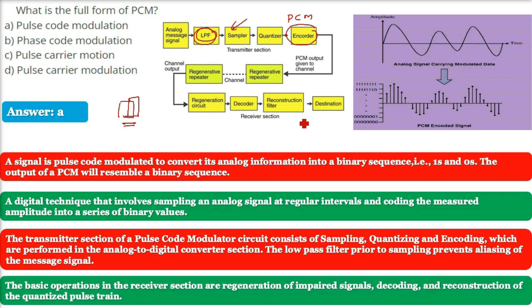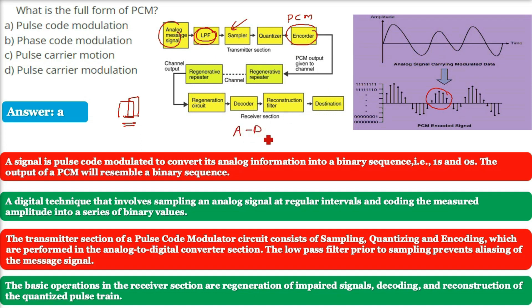At the receiver section, the operations are: regeneration of impaired signals, decoding, and finally reconstruction of the quantized pulse train. The analog signal — originally a continuous wave — becomes a pulse train at the receiver, showing only ones and zeros, which can be represented as a bar graph.